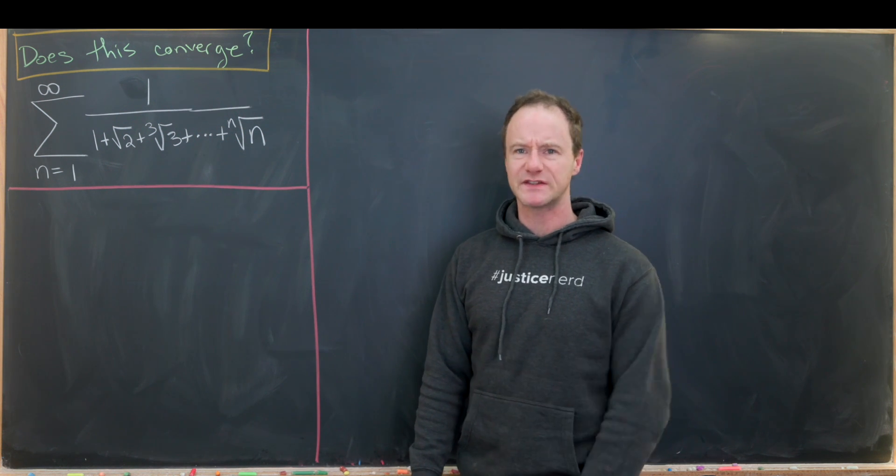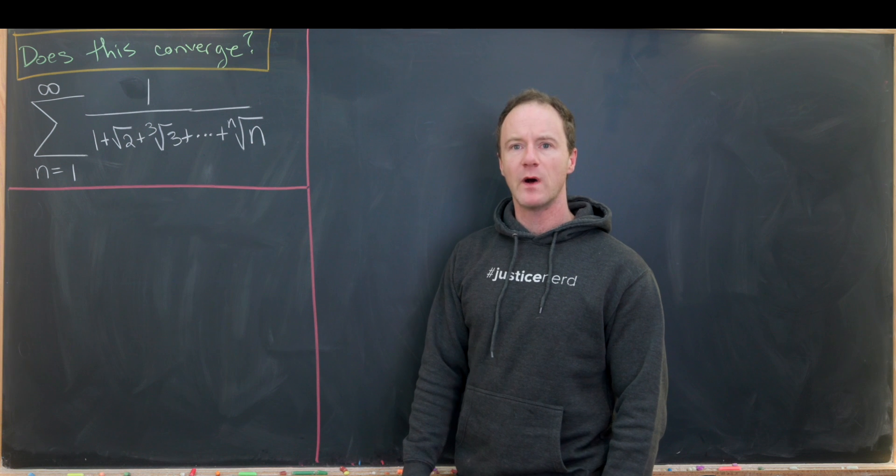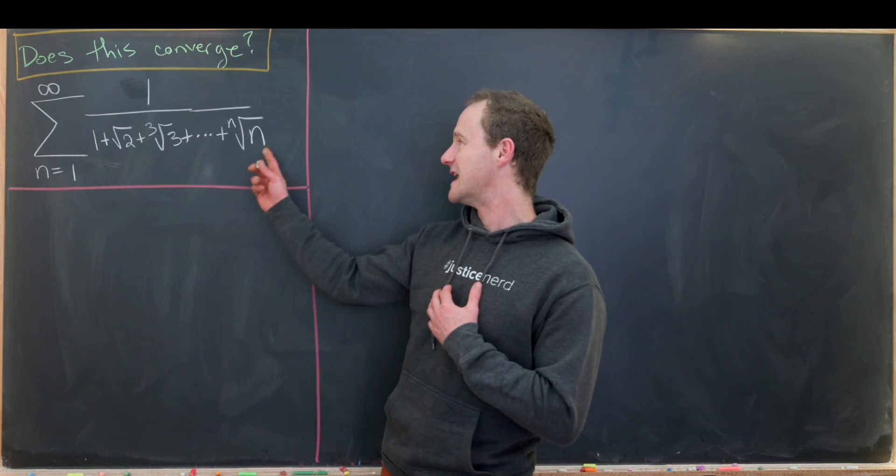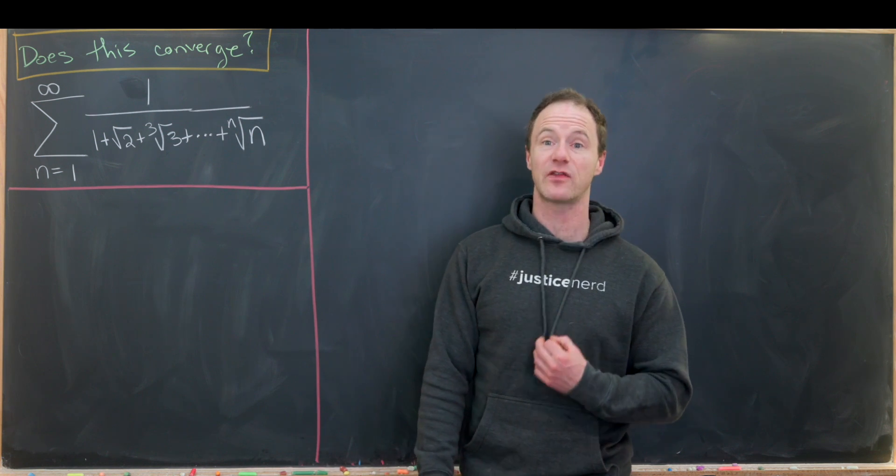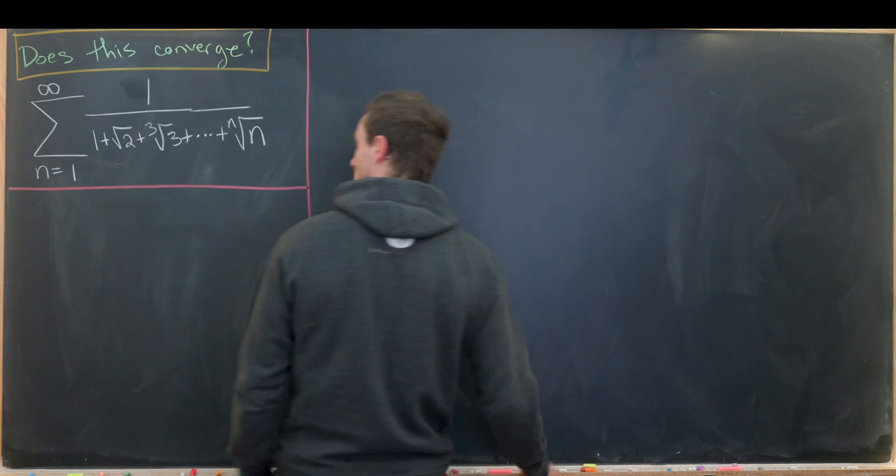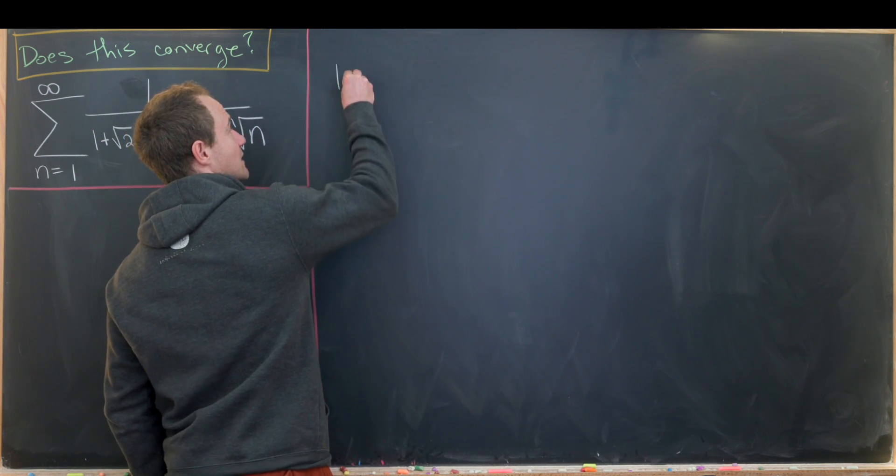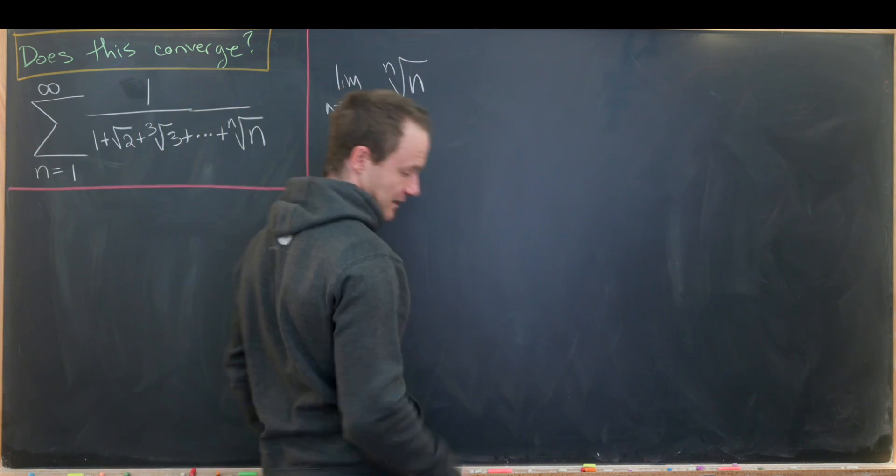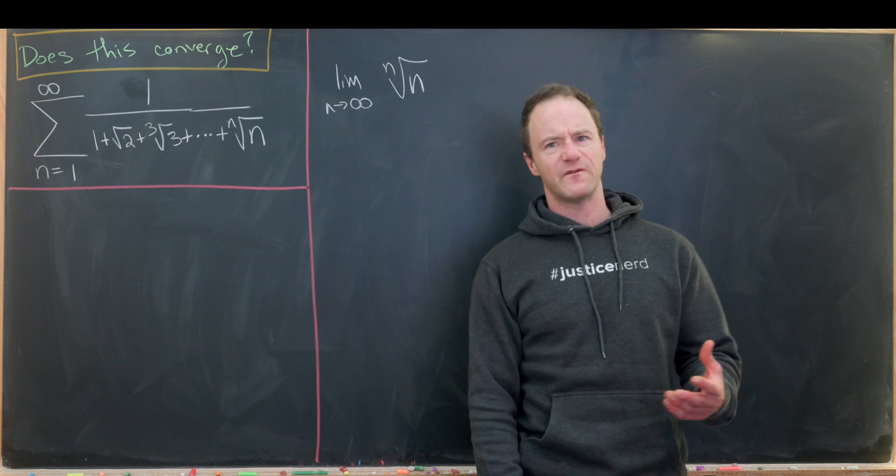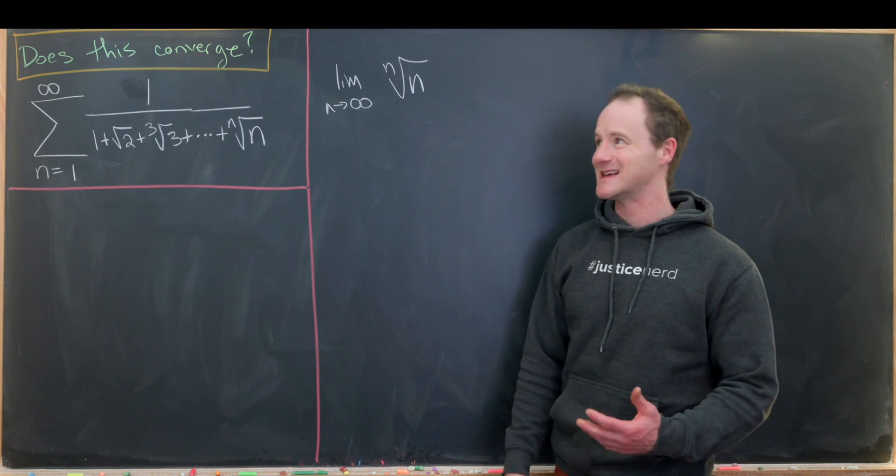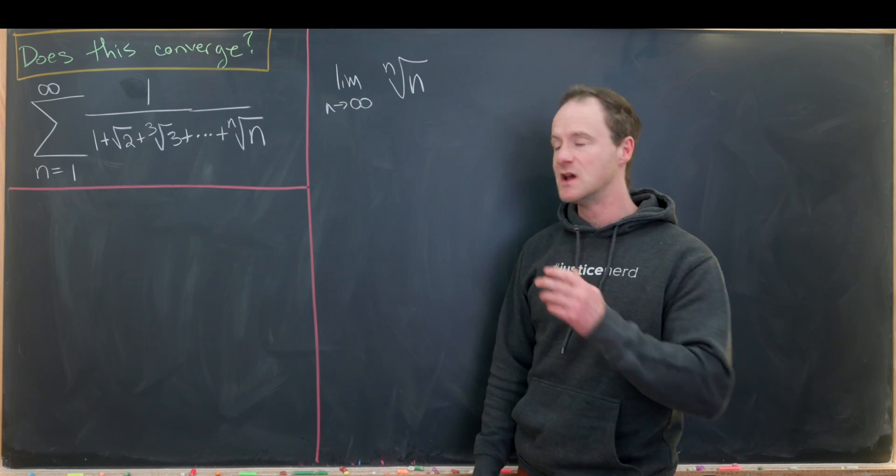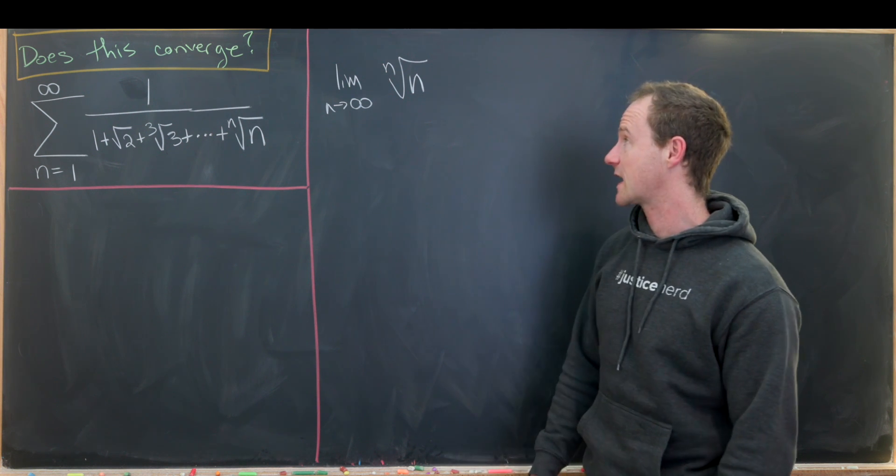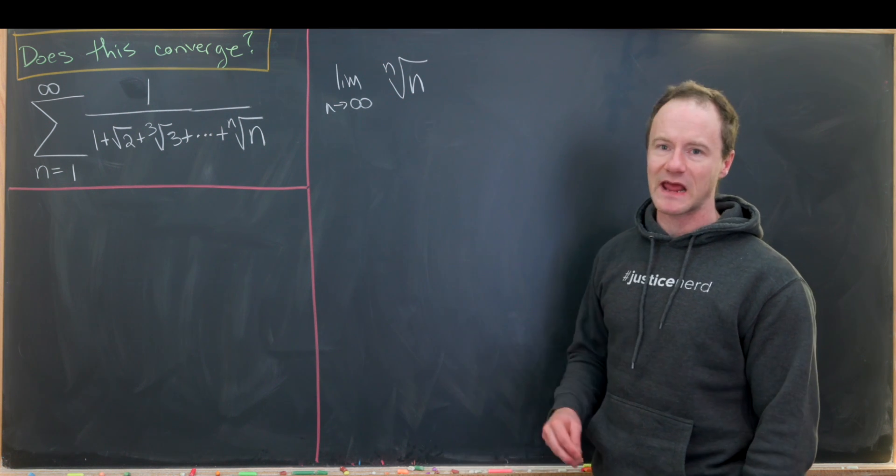Okay, how can we get started with this? Well, maybe the first thing to think about since we're letting n go from 1 to infinity is what's the end behavior of the nth root of n? So in other words, we'd like to look at the limit as n goes to infinity of the nth root of n. Obviously, if we find the value of this, that doesn't necessarily tell us if this converges or diverges, but it gives us maybe some sort of idea for a plan of attack.